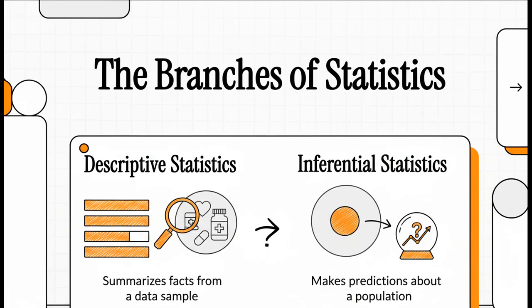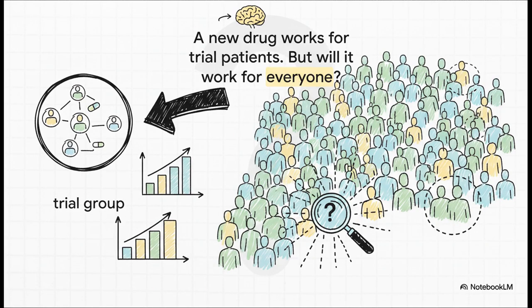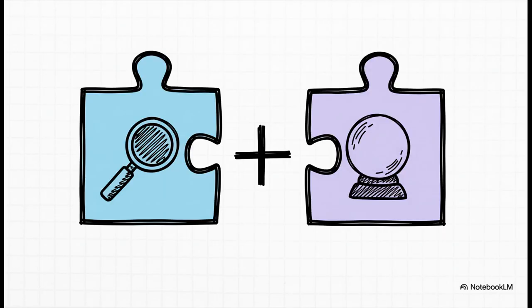Let's talk about biostatistics. It sounds kind of complicated, right? But really, it's the amazing science that takes these huge mountains of health data and turns them into insights that can literally save lives. Think about a question like this: a new drug seems to work in a trial, but is it going to work for you or your family? This is a huge question, and statistics is the tool, the framework we use to get a real answer. It turns out there's a really important two-step process, and once you get this, it's going to be the key to making sense of pretty much any health study you read about.